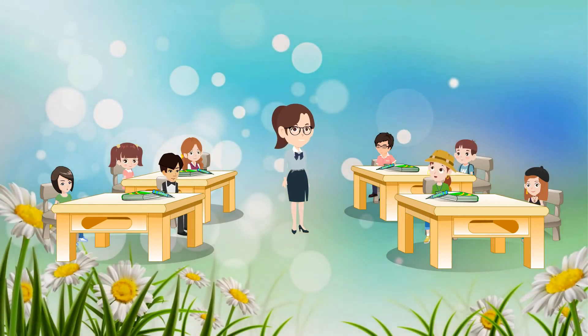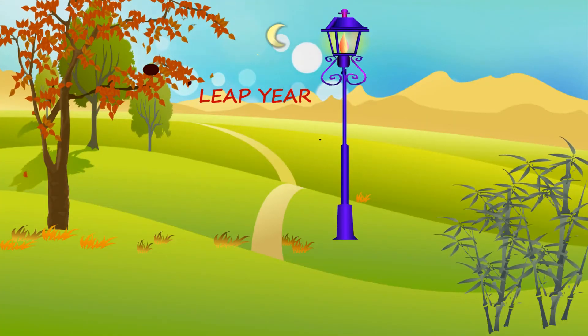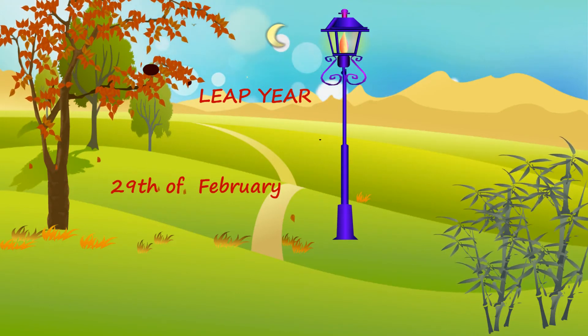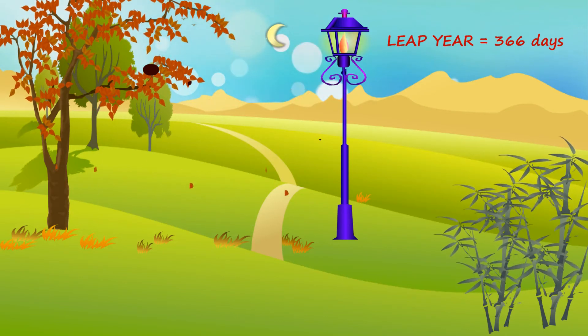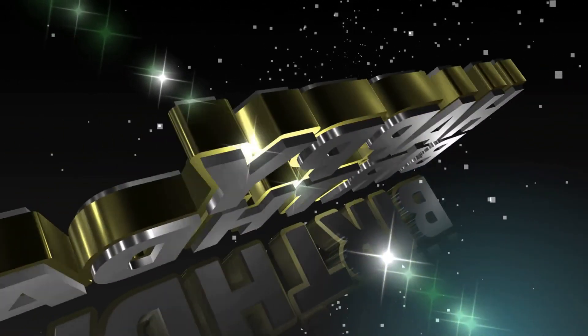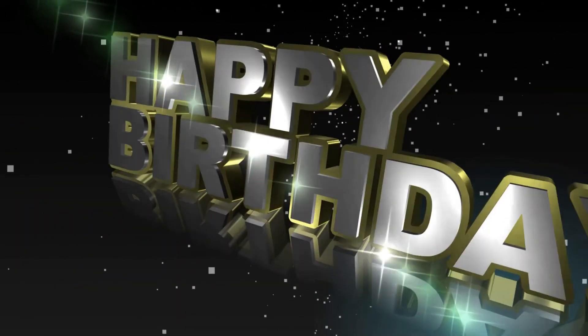One interesting thing is leap year. Leap year always has one extra day — the 29th of February. Leap year comes every four years and has 366 days. People born on the 29th of February have to celebrate their birthday on 28th of February or on the 1st of March.